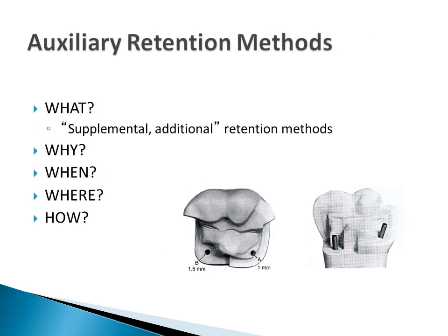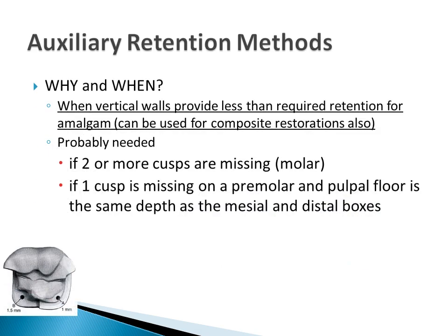With direct restorations, there are times when we need additional retention. There are several methods for adding retention. Vertical walls, when parallel or converging, offer retention for direct restorations. When the tooth has missing walls, the operator has to consider additional retention methods. Auxiliary retention is typically needed if two or more cusps are missing on a molar, or if one cusp is missing on a premolar. To use a pin, 3.5 or 4 mm of preparation depth must be present — 2 mm for the pin and 1.5 or 2 mm for the amalgam, depending on whether it is a functional or a non-functional cusp.